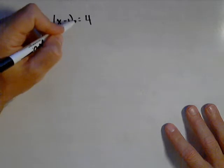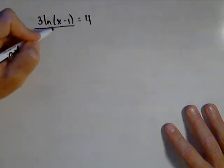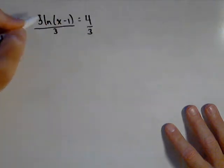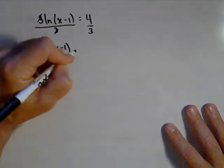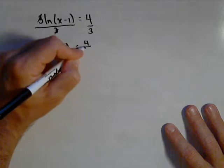We're going to isolate the log. There's nothing added, so we don't have to worry about that. We're just going to divide both sides by 3, and we get ln(x - 1) equals 4/3.